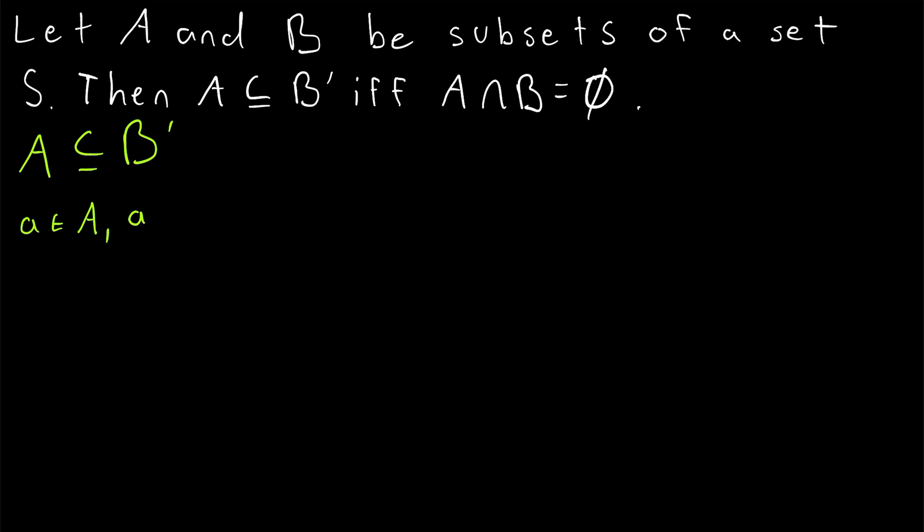we have that a, by definition of subset, is also an element of the complement of B. Then, by definition of the complement of B, we have that a is not an element of B, because the complement of B only contains elements that are not in B, but are in our universal set S.